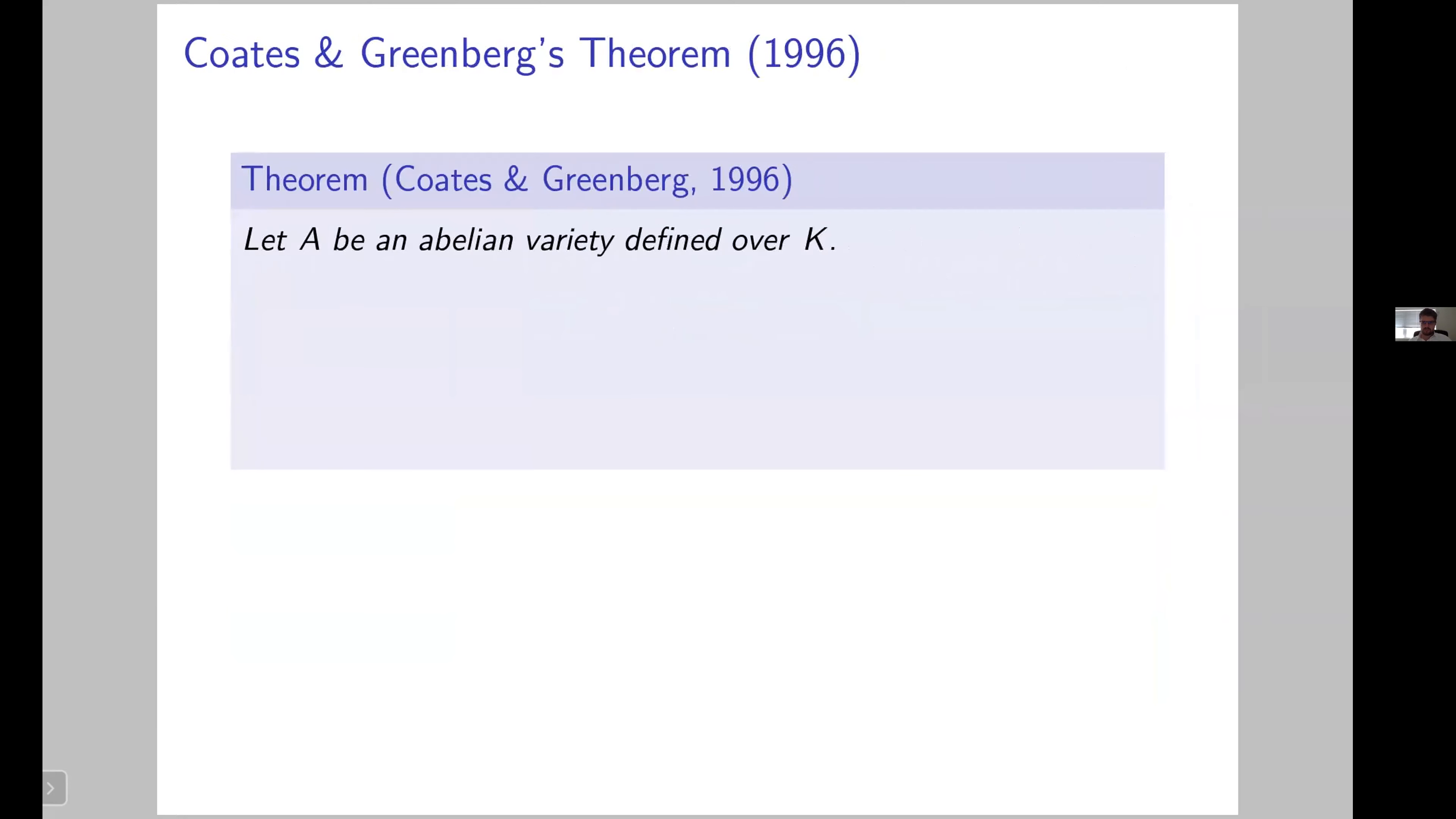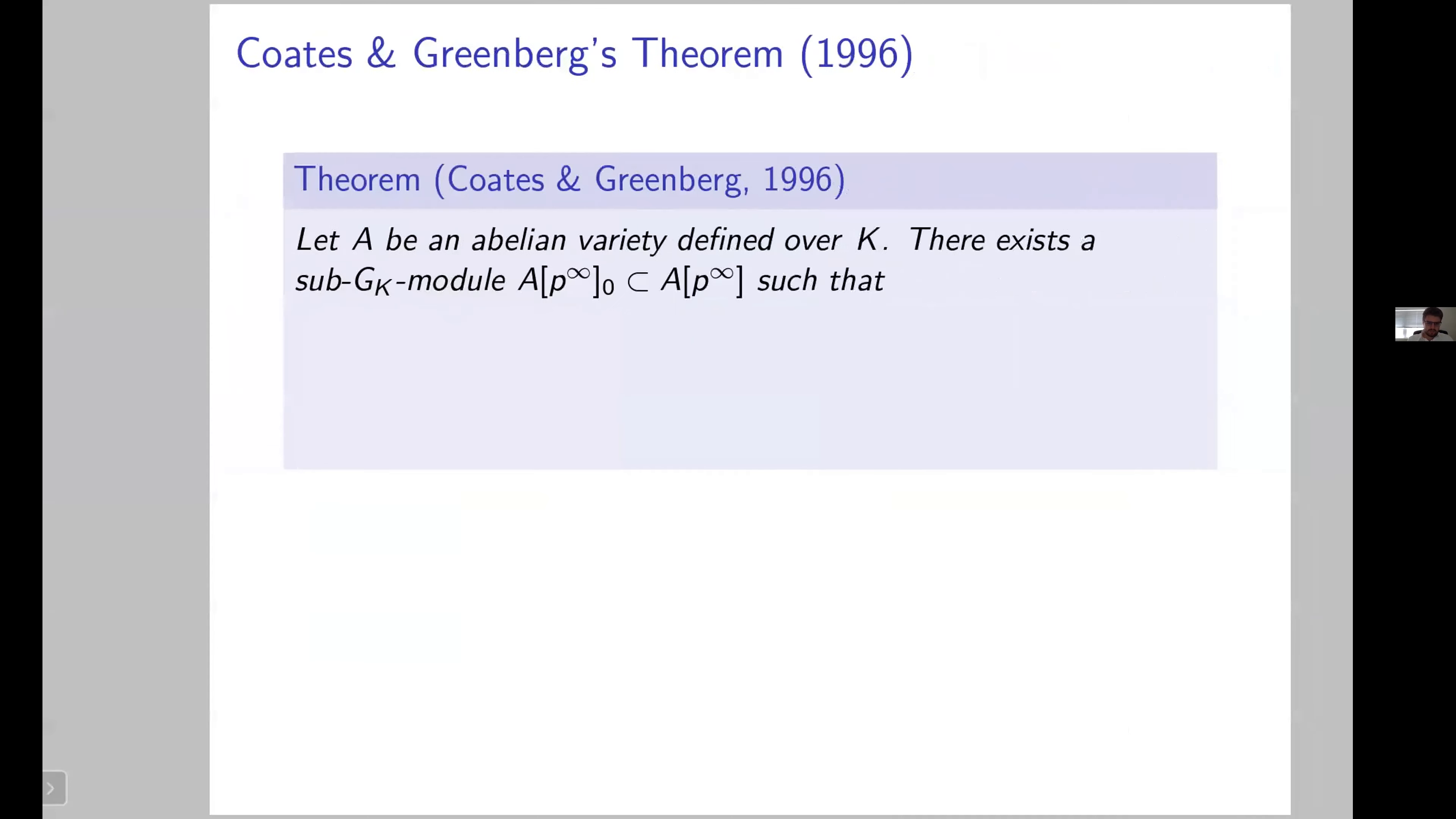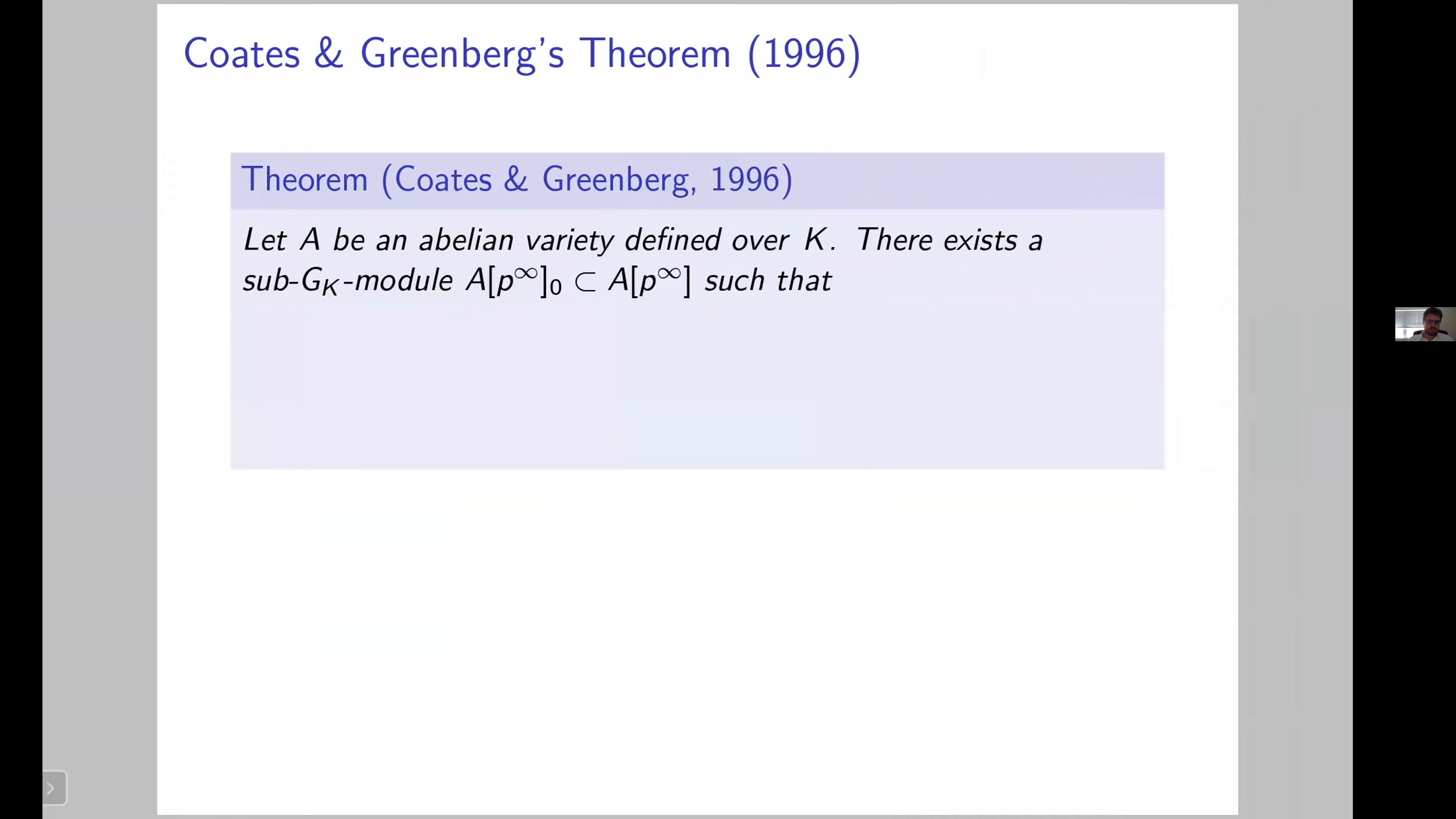Now the result of Coates and Greenberg is the following. Take an Abelian variety defined over a finite extension of Q_p. What they prove is that there exists a sub-Galois module of the p-power torsion points, which I'll denote A[p^∞]_0, such that if L is perfectoid, then this image of the Kummer map actually coincides with the image of the natural map that you get in cohomology, simply induced by the inclusion of A[p^∞]_0 inside A[p^∞].